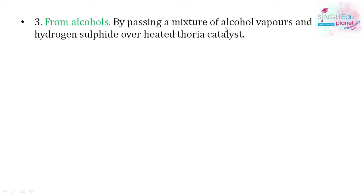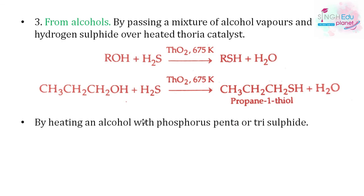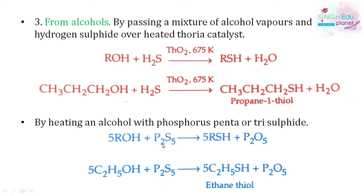Third method: from alcohols. Alcohol vapors are passed over hydrogen sulfide over a heated thorium dioxide catalyst. When alcohol is treated with hydrogen sulfide and passed over a thorium catalyst, thiols are formed. For example, passing propanol over hydrogen sulfide with a thorium catalyst gives propane-1-thiol. Alternatively, treating alcohol with phosphorus pentasulfide (P₂S₅) or phosphorus trisulfide with heat also gives thiols. For example, adding ethanol to phosphorus pentasulfide gives ethyl thiol.